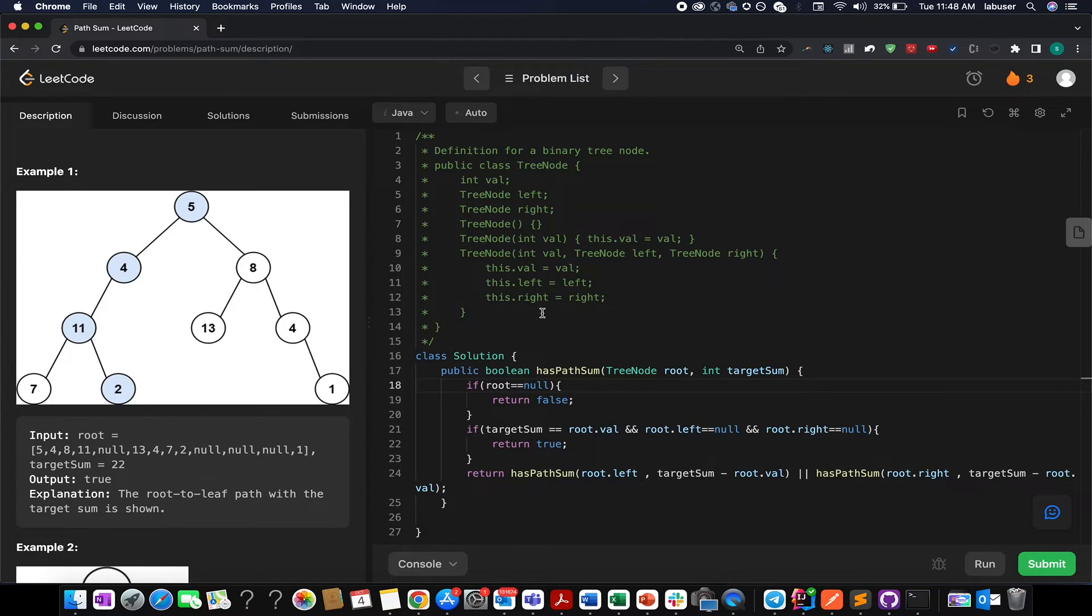I have written the code in a very simple manner. I check if my root is null, I return false. Otherwise, I check if my target sum happens to be equal to my root.val. That means I have found a happy case. Along with this, I should also check whether the current node happens to be the leaf node. If that is the case as well, I return true.